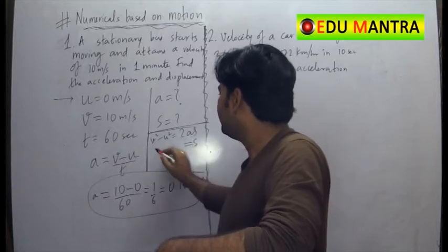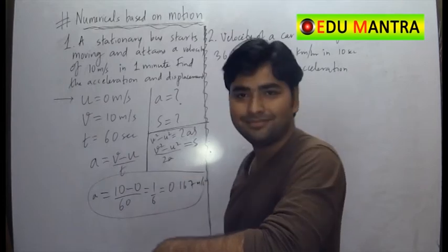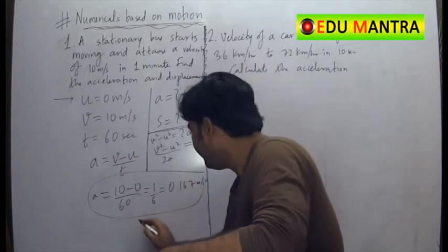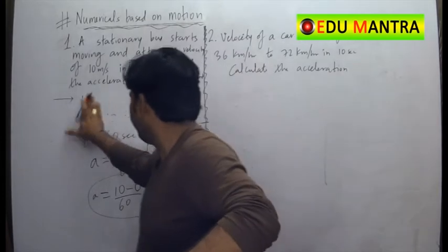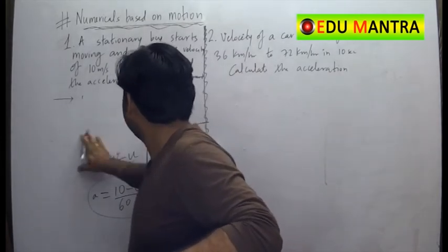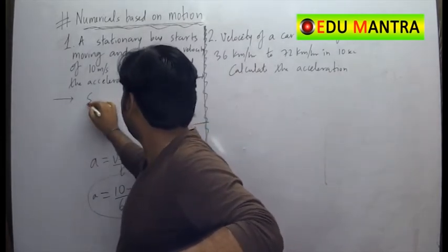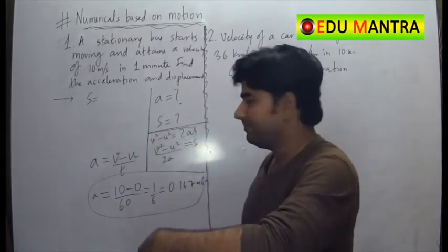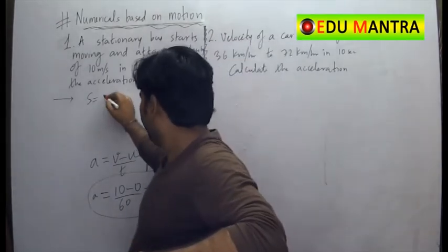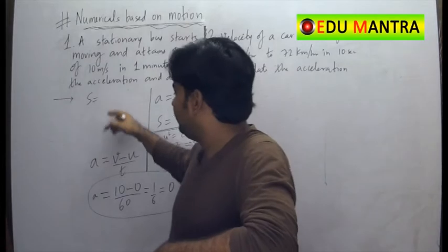So what is S? S is v square minus u square by 2a. Right? So if it is used, I will write it here. So it is S is equal to v square. That is, how much is v? It is 10.